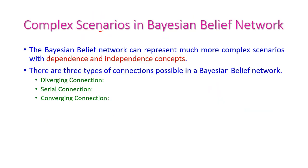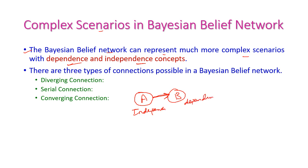First, let us see the complex scenarios in Bayesian belief network. The network can represent much more complex scenarios with dependence and independence concepts. In our previous class, we have seen what is dependence and what is independence. Here, A and B are two variables. A is related to B — A is the independent variable and B is the dependent variable. The event B will occur only after event A occurs.